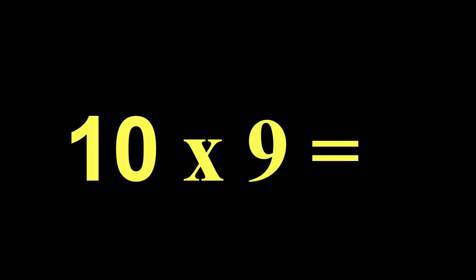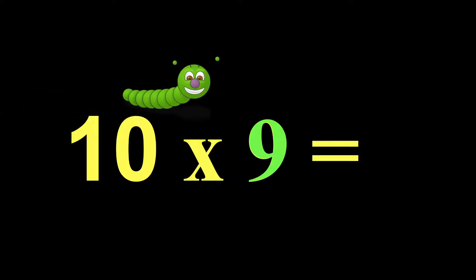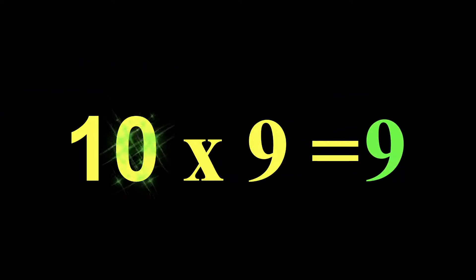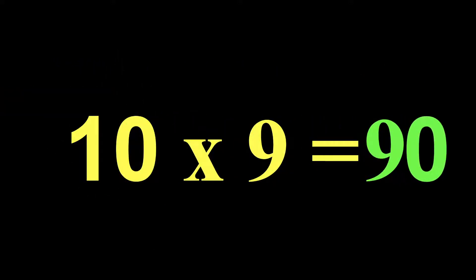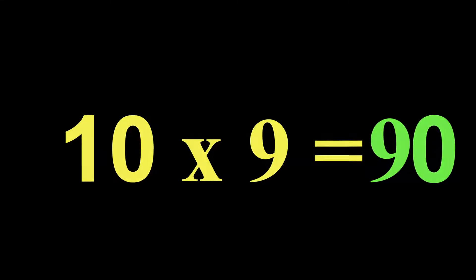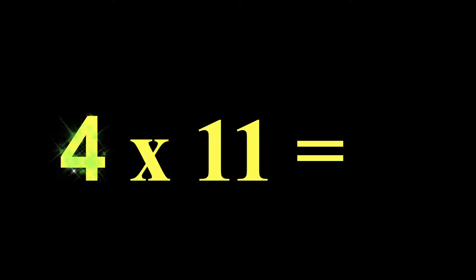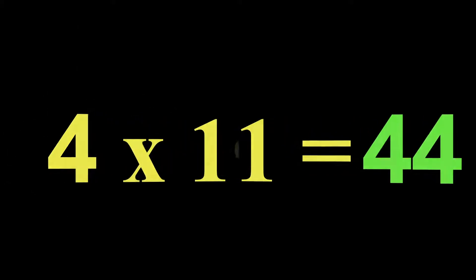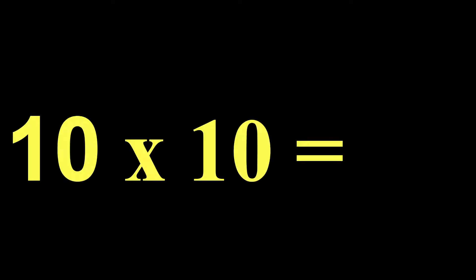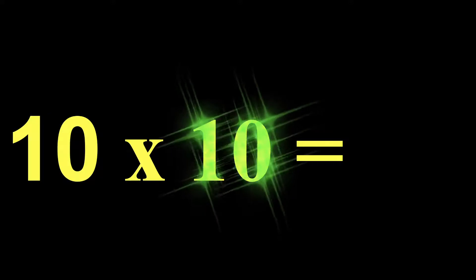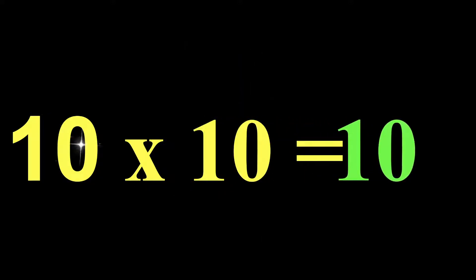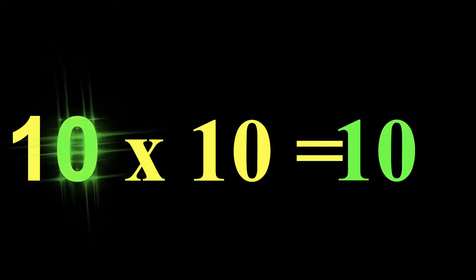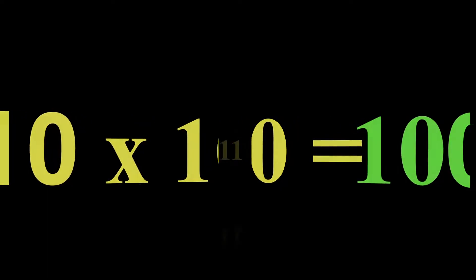10 times 9 — that is just our 10 rule. So we are going to take our 9, add a 0, and 10 times 9 is 90. 4 times 11 — let's just double the 4, so 4 times 11 is 44. 10 times 10 — that is going to be the 10 rule still. Take your 10, add a 0, and 10 times 10 is 100.